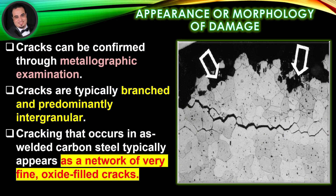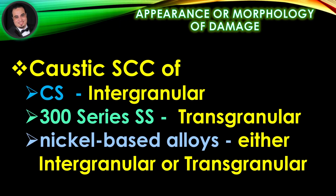Cracks can be confirmed through metallographic examination. Cracks are typically branched and predominantly intergranular. Cracking that occurs in as-welded carbon steel typically appears as a network of very fine, oxide-filled cracks. Caustic stress corrosion cracking of carbon steel is typically intergranular; in 300 series stainless steel it is typically transgranular; and in nickel-based alloys it has been observed as either intergranular or transgranular.